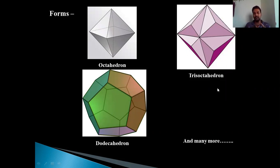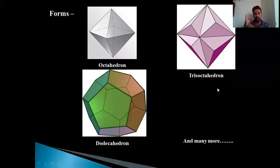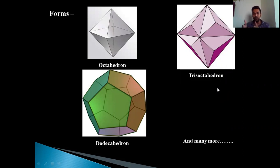Another example is the dodecahedron — do means two, deca means ten, so ten plus two equals twelve, giving 12 faces. The complexity can go up to 48 faces. In cube there are six faces, in octahedron eight, in dodecahedron 12, in trisoctahedron 24, and you can go up to 48 faces and many more.